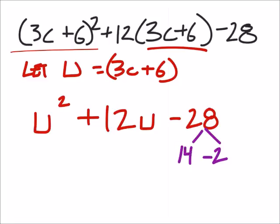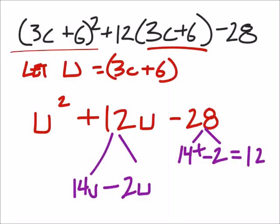14 and -2. So when I add these two, I get that 12. So 12 is going to split up into 14u and then minus 2u, and of course we add minus 28 and u².